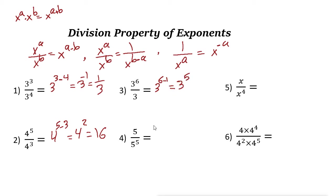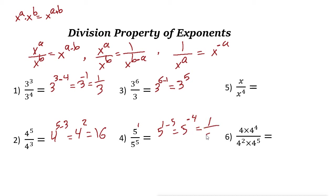Number four: 5 to the power of 1 over 5 to the power of 5, so it is 5 to the power of 1 minus 5, or 5 to the power of negative 4. If you want to make the power positive, move it to the denominator: 1 over 5 to the power of 4.